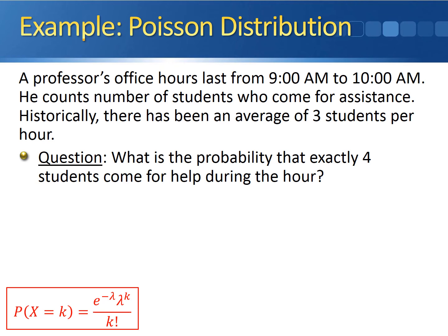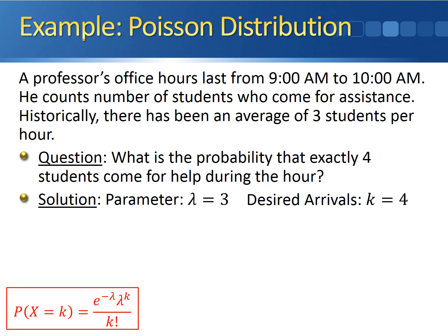Let's calculate the probability for the earlier example. We're still looking at this professor whose office hours last for one hour from 9 to 10 a.m. He knows that historically there's an average of three students who show up every hour. We want to know the probability that exactly four students come for help during the hour. Before plugging things into the equation, we identify lambda and k. Lambda equals three, since he averages three students per hour. k equals four, since we want exactly four arrivals.